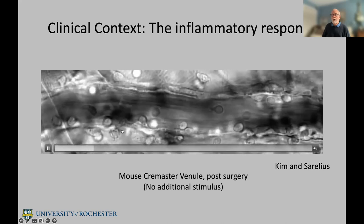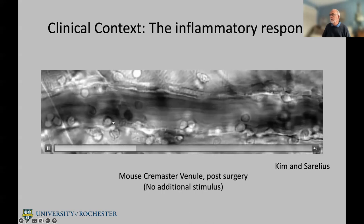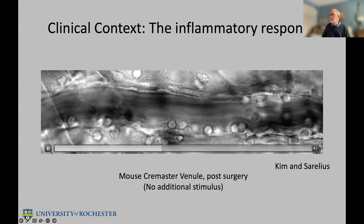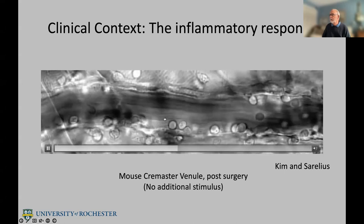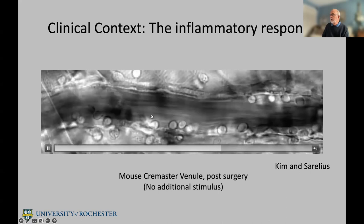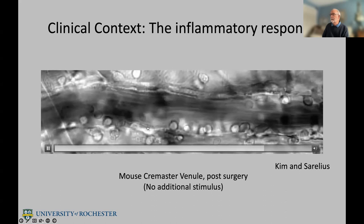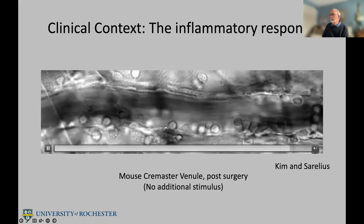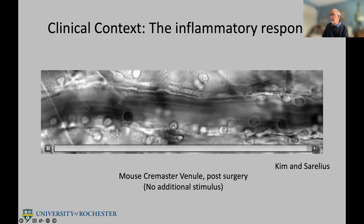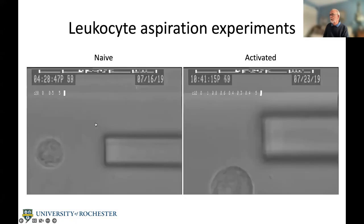You can see that cells are rolling along the surface, some cells are adhered to the surface, and some have actually crawled into the surrounding tissue where they could deal with a pathogen or an injury. This is all happening in a very complex mechanical environment, and to really understand this process at a fundamental level, you need to understand how the mechanical properties of the cell and of the interface might affect these adhesive interactions. That's the focus of today's talk.